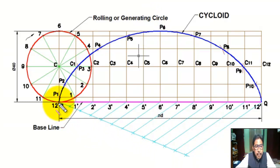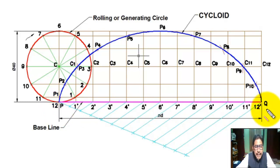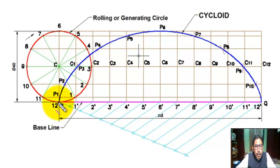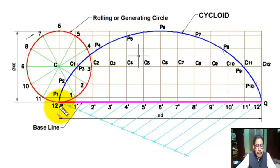Draw the baseline PQ, tangent at point P. PQ is equal to the circumference of the rolling circle — that means the perimeter of the circle equals PQ.